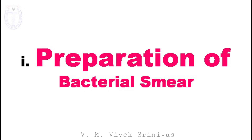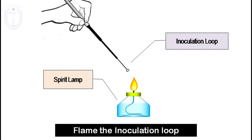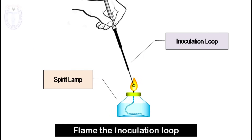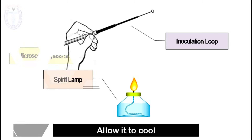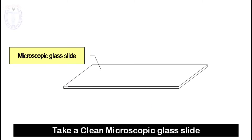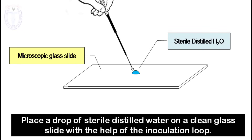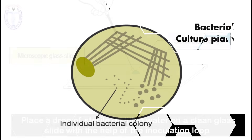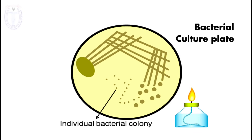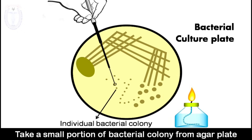First, flame the inoculation loop to red heat and allow it to cool. Take a clean microscopic glass slide and place a drop of sterile distilled water on it. With the help of the inoculation loop, take the bacterial culture plate, open it near the spirit lamp, and take a small portion of the bacterial colony.